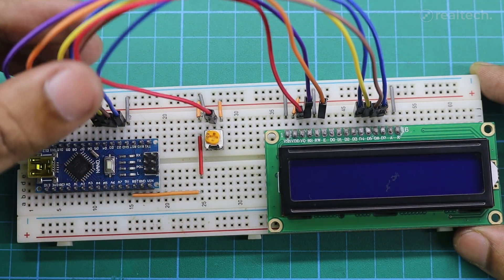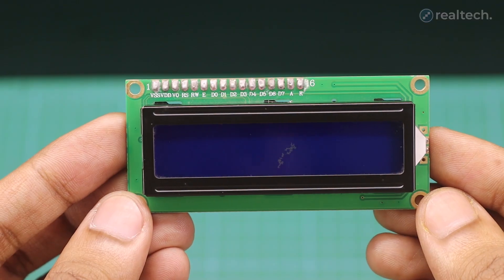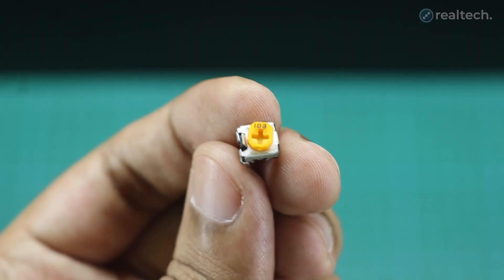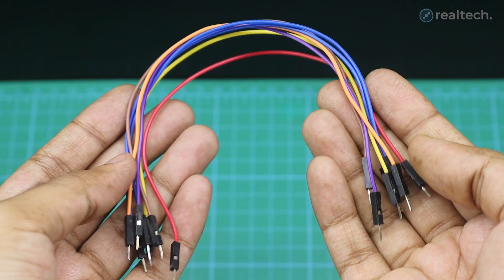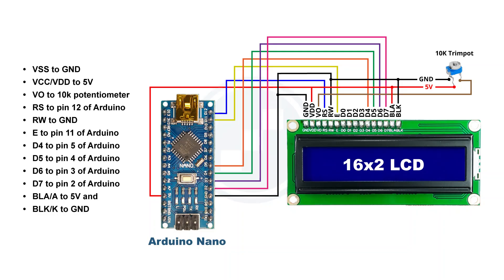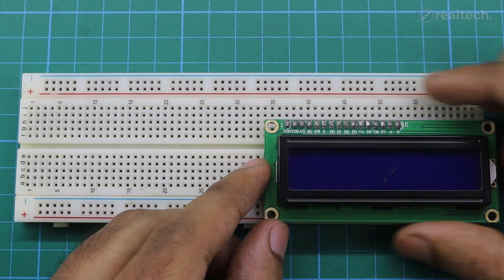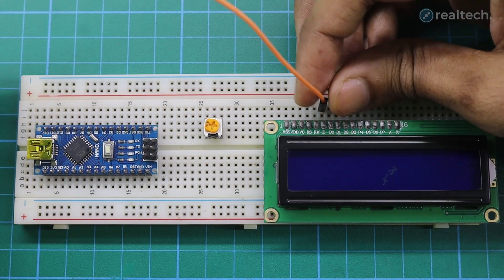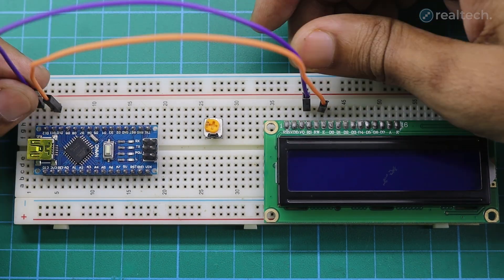Now let's see how to connect this LCD with an Arduino board. You'll need an LCD, any Arduino board, a 10K potentiometer, some jumper wires, and a breadboard. Here's a simple wiring diagram — connect all the components on your breadboard according to the diagram.